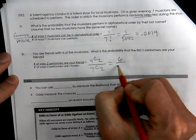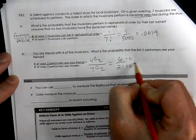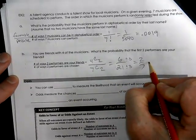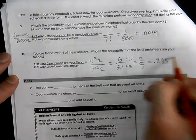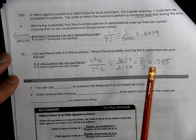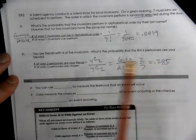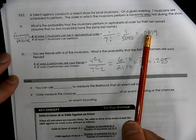So that is 6 over 21. And that can be reduced to 2 over 7, which is 0.285. So much more likely that you're going to listen to two of your friends first compared to them lining up in alphabetical order.